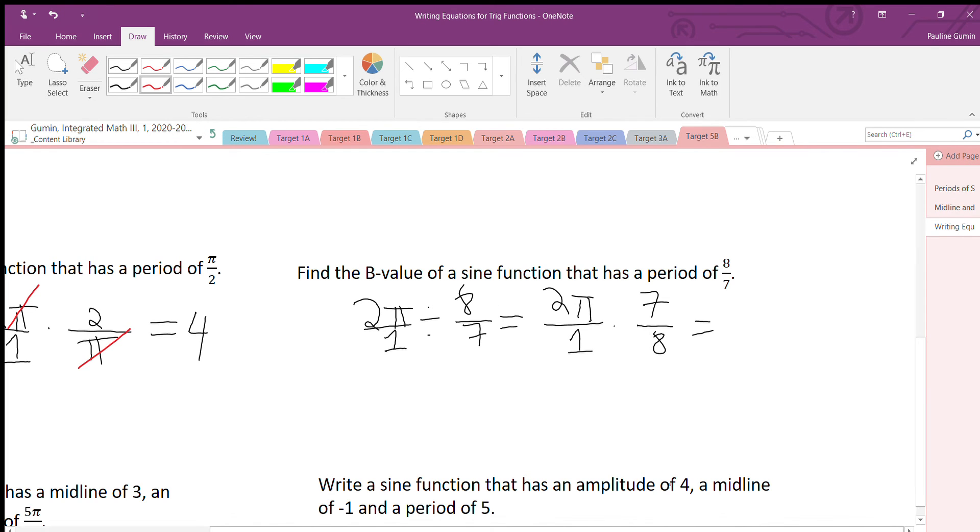Okay, let's see what I can reduce. Aha! I can reduce the 2 and the 8. I divided them both by 2. That's about it. Let's multiply straight across. On top, I'm left with 7π, and on the bottom, a 4. So in this case, our B value is 7π over 4.